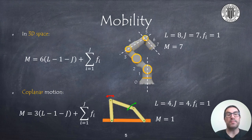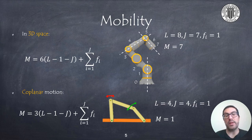So, now let's analyze the mobility of an articulated robotic system. This will depend on the number of links, L, including the fixed link, as well as the number of joints, J, and the degrees of freedom for each joint, denoted here as Fi. As you can see, the mobility formula is shown there.